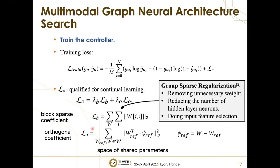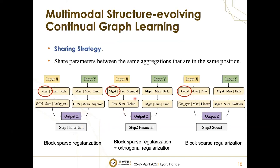To help understand our sharing strategy and group sparse regularization, we use an example of an NMGN cell. In step one, the best correlation function is found to be NMGN, so this node should be considered in block sparse regularization. In step two, the best is NMGN again, so it is considered in both block sparse and orthogonal regularization. After retraining the shared model, the parameters of NMGN in step two are covered by the new parameters. In step three, the best correlation function is const, so this const node needs to be computed in only block sparse regularization.